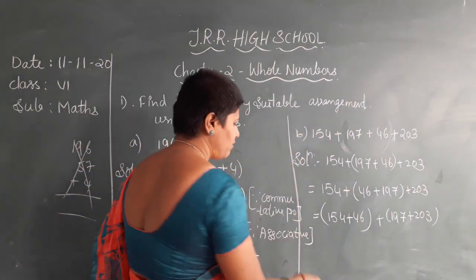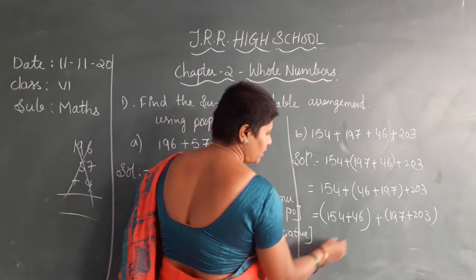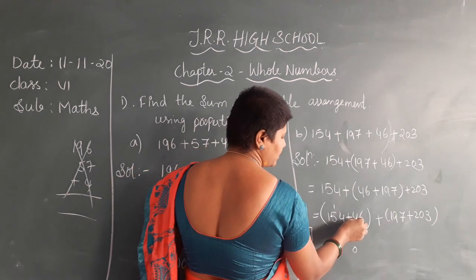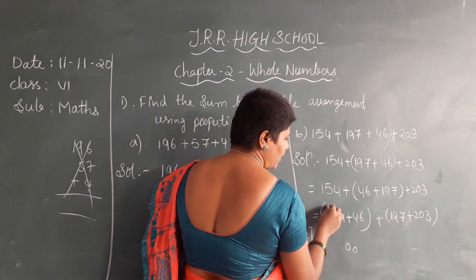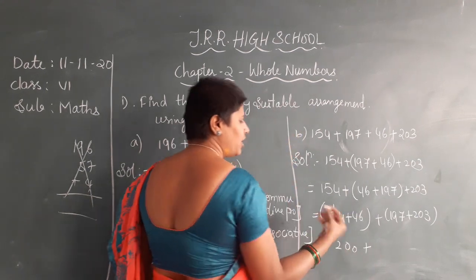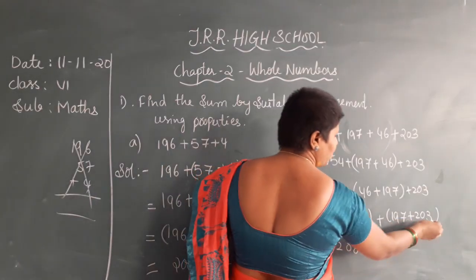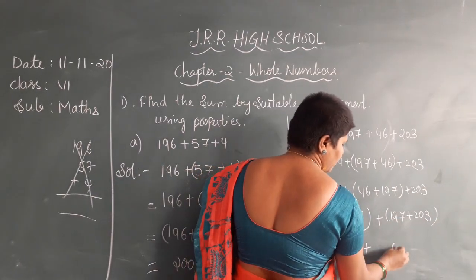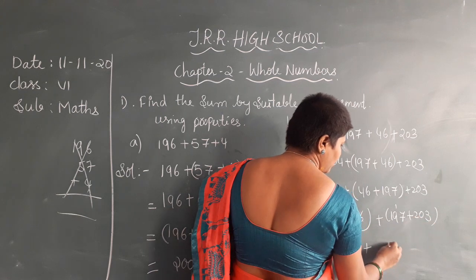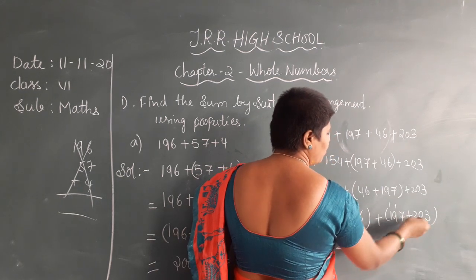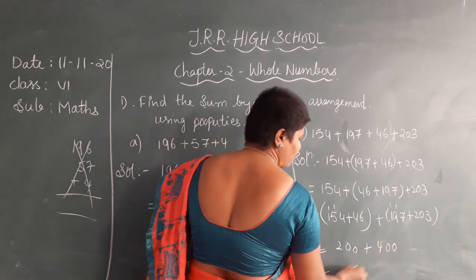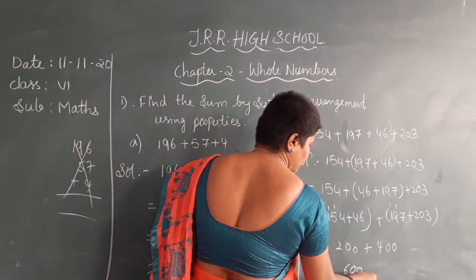Now you have to add these two. 154 plus 46 — 6 plus 4 is 10, carry 1; 5 plus 4 plus 1 is 10 — that gives 200. And 197 plus 203 — 7 plus 3 is 10, carry 1; 9 plus 0 plus 1 is 10, carry 1; 1 plus 2 plus 1 is 4 — that gives 400. Now you can add easily: 200 plus 400 gives you 600.